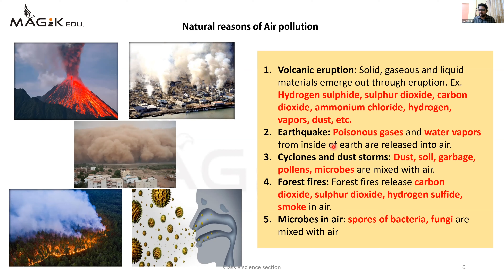Cyclones and dust storms - dust, soil, garbage, pollen, microbes are mixed in air. Jab bhi cyclones ya phir dust storms aate hain, to soil par, ya phir hamaari zameen par jo bhi dust hoti hai, soil hoti hai, garbage, pollen, microbes - yeh hawa ke saath gol gol chakkar khaane lagte hain. Jiske wajah se yeh air circulate ho jaata hai aur air pollution cause karta hai.